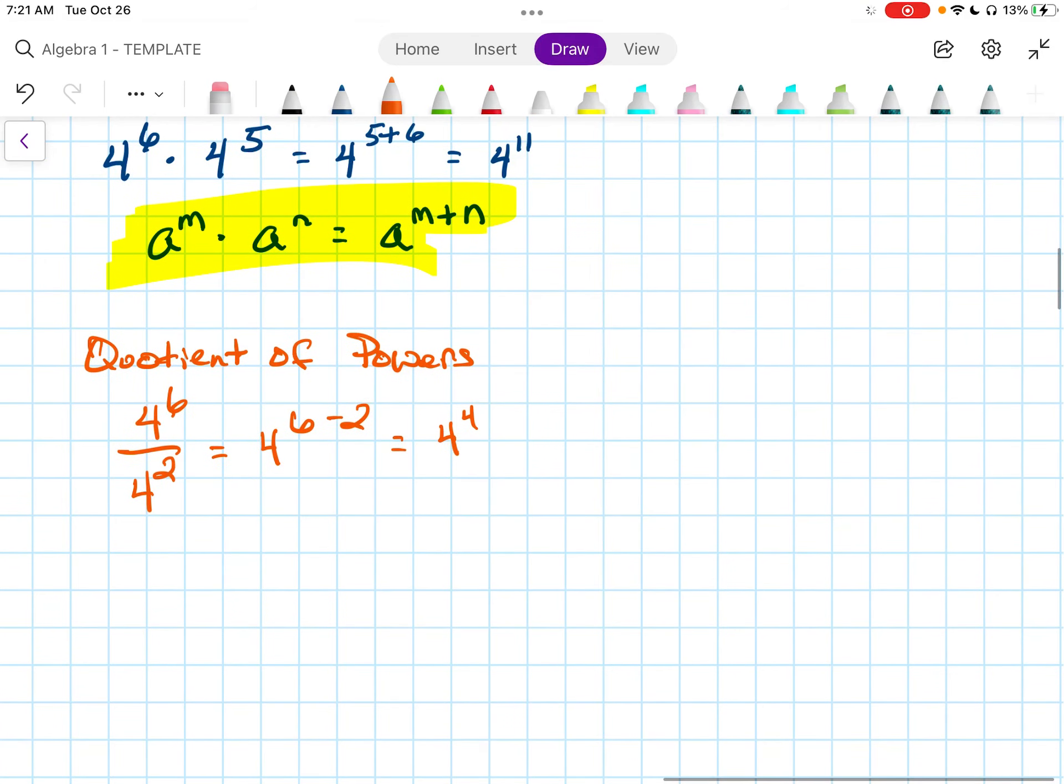Using algebra, we could say, well, if we have A to the M over A to the N, that would be A to the M minus N.